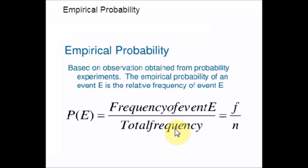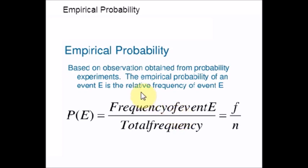Theoretical probability does not vary because the outcomes are set by the situation, but in the case of Empirical Probability, the answer will vary depending on the results of the experiment or sampling. Now I am going to give you the laws of probability that Empirical Probability follows.